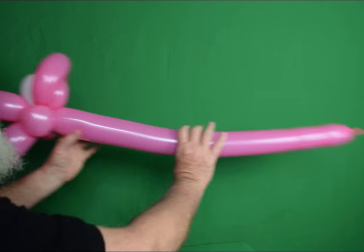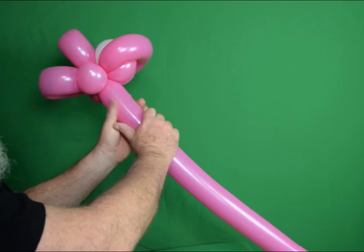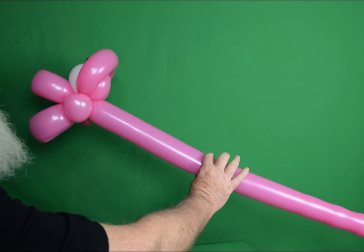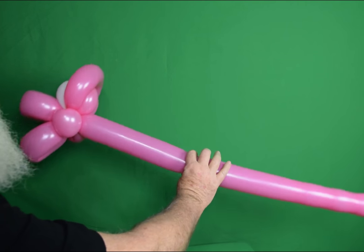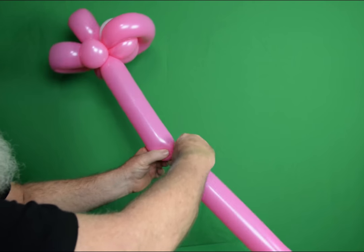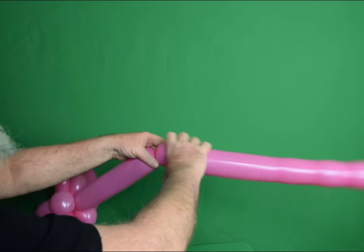Now what we're going to do, we've got this remaining part. I'm going to give it a little squeeze. Always work it soft. So go down about a third, a little less than a third of the way down. Twist off a bubble and make a pinch twist.